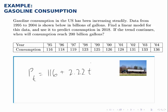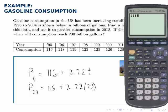If we want to predict consumption in 2018, all we need to do is plug in a t value that corresponds to 2018. 2018 is 23 years after 1995, so we'll let t equal 23. 116 plus 2.22 times 23—we predict that in 2018 the gasoline consumption in the US will be just over 167 billion gallons.